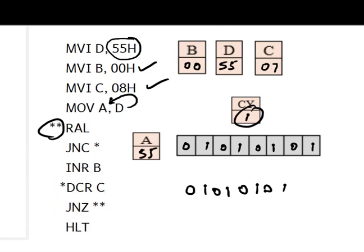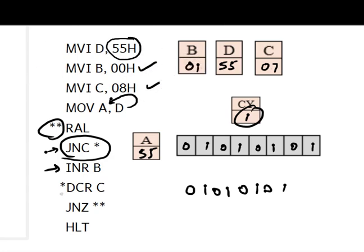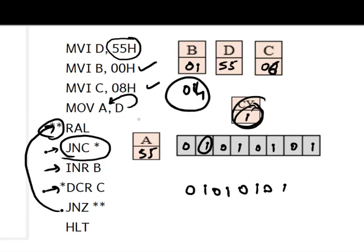Because carry is now set, JNC does not jump — instead we increment B. B was 00 and becomes 01. Then DCRC decrements C to 06, and JNZ jumps back to RAL. This continues for all 8 bits: whenever a 1 is rotated out carry is set and B is incremented. After all eight rotations, B will contain 4, because 55H has four ones.